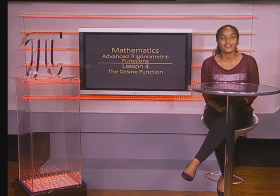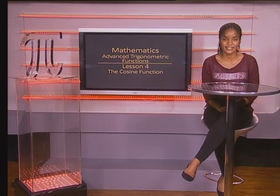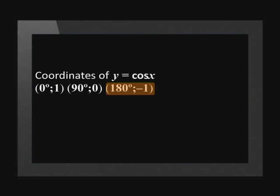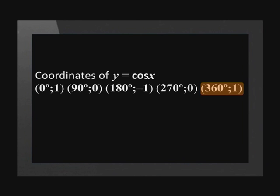Our standard graph is y equals cos x. Its main coordinates are: (0, 1), (90, 0), (180, -1), (270, 0), and (360, 1).